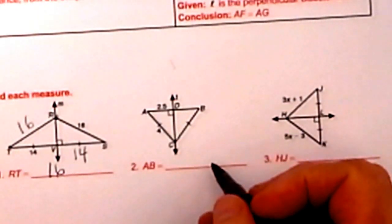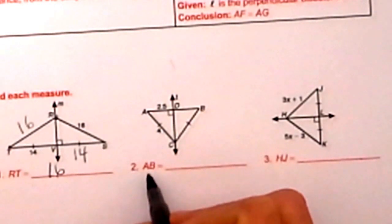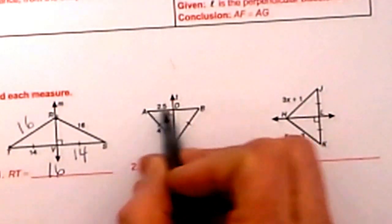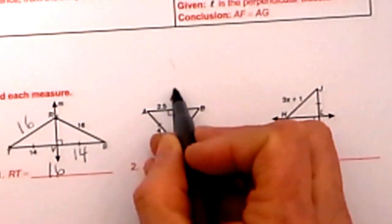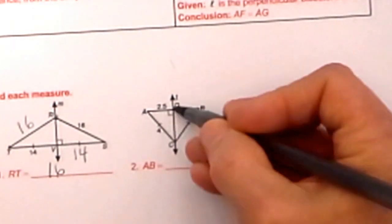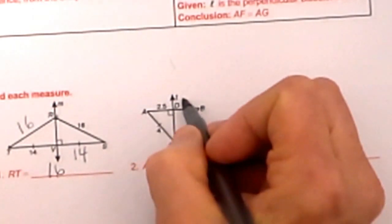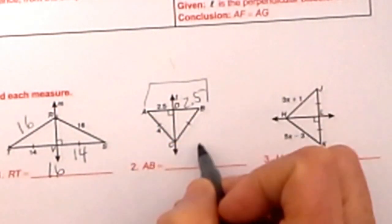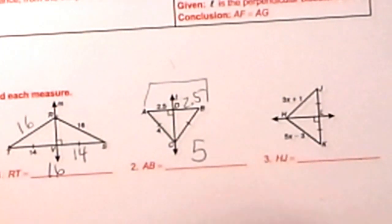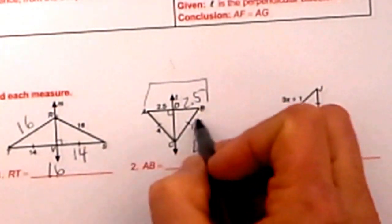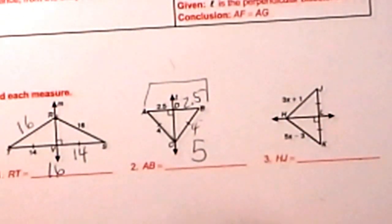Let's look at the second diagram. We are looking for the length of AB. We know the segment AB is being bisected by this segment DC. So if it is being bisected, we know this side is 2.5, so the whole segment would be 5 because we add those together. And of course we would know BC is 4 because we have two congruent triangles. But that's not what the question was asking, but that's something else you know.